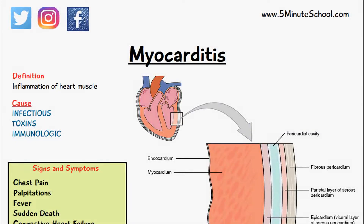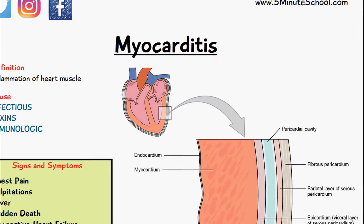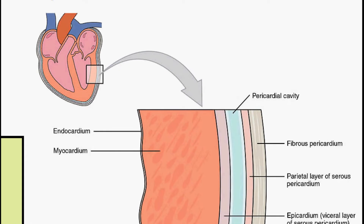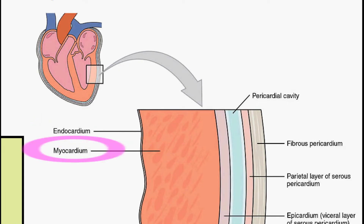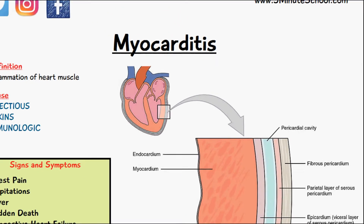In today's video we'll be talking about myocarditis, which is the inflammation of the heart muscle. We've mentioned in previous videos that there are several layers to the heart including the endocardium, myocardium, and the pericardium. Myocarditis is specifically the inflammation of the myocardium layer.